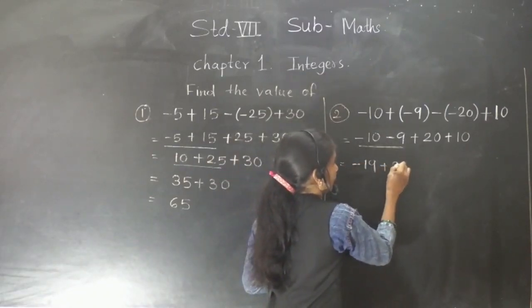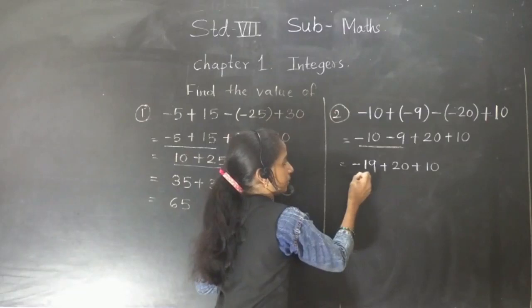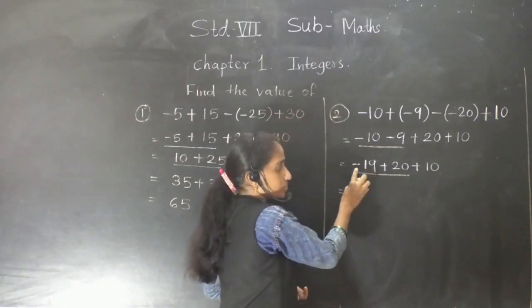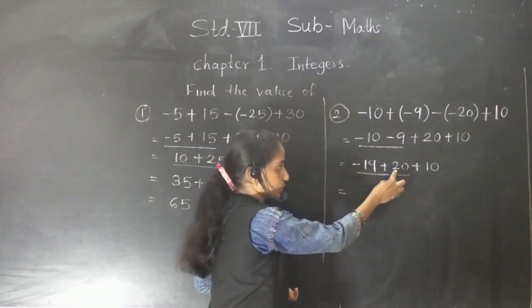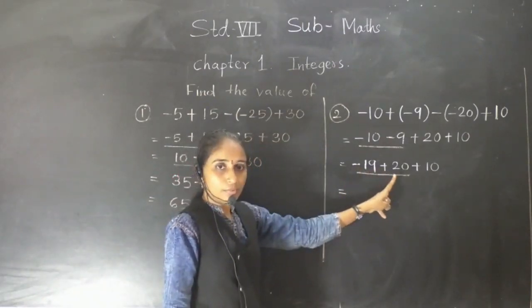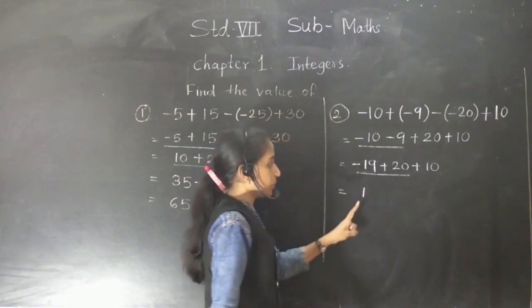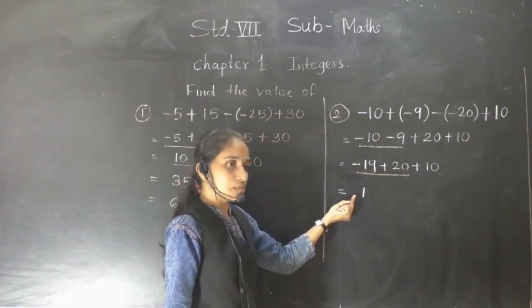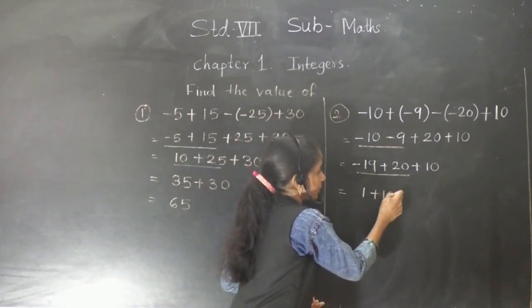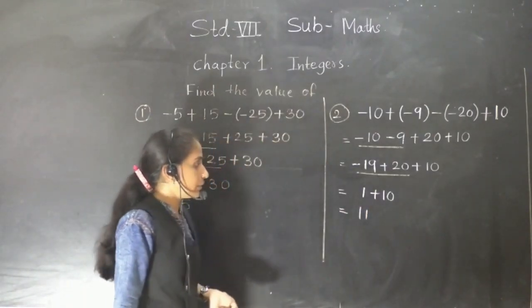Plus 20, plus 10. After that, we solve: minus 19 plus 20. One number is negative and another is positive. So from 20 we subtract 19. The answer is 1, and we give the positive sign. So it will be plus 1. After that, we write plus 10. So the answer will be 11.